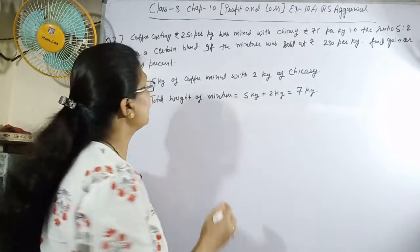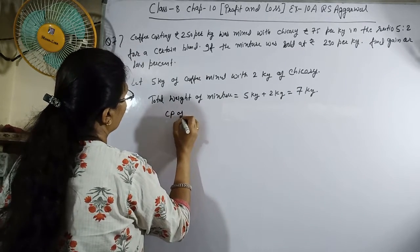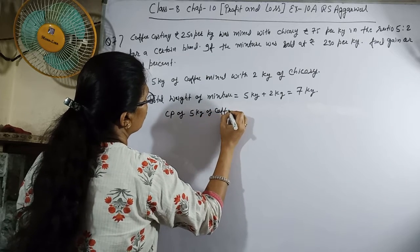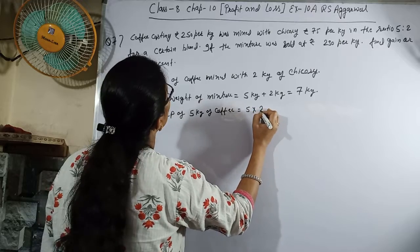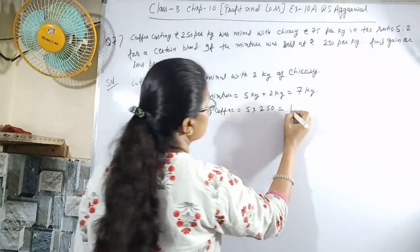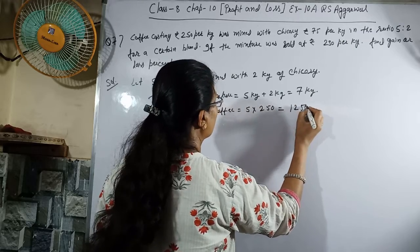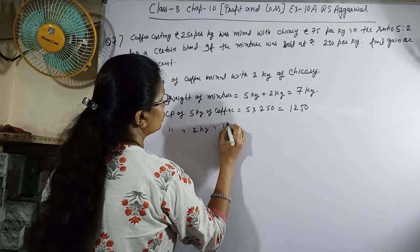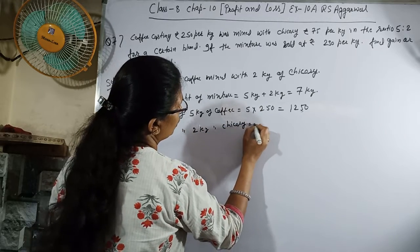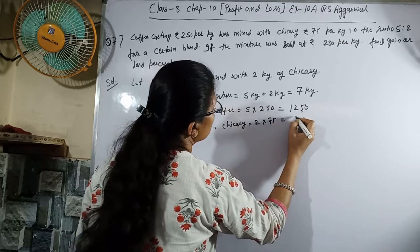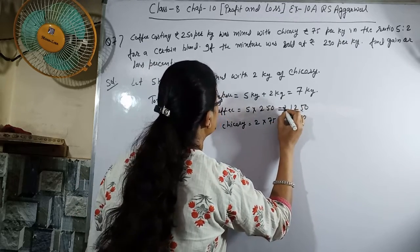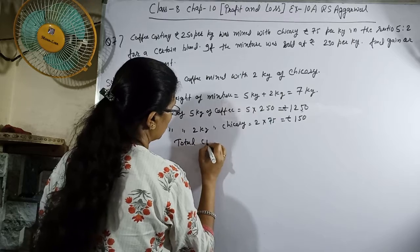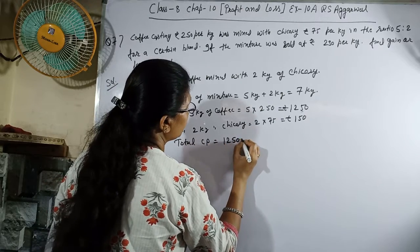Cost price of 5 kg coffee: 5 × 250 = 1250. Cost price of 2 kg chicory: 2 × 75 = 150. Total CP = 1250 + 150 = 1400 rupees.